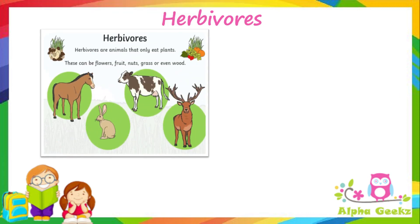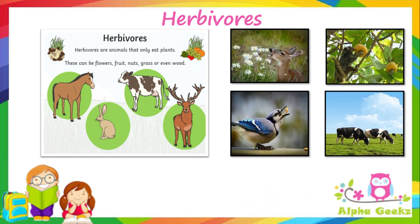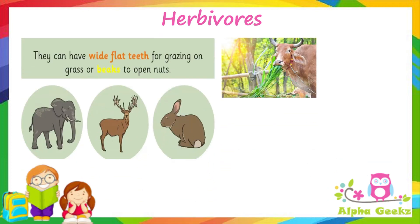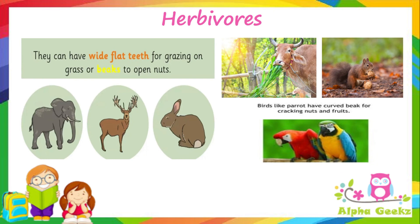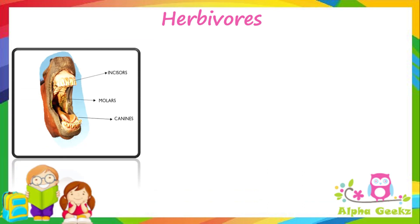Herbivores are animals that eat only plants. These can be flowers, fruit, nuts, grass or even wood. They can have wide flat teeth for grazing on grass or beaks to open nuts. Birds like parrots have curved beaks for cracking nuts and fruits. As these animals depend solely on eating plants, the plant food is rich in a substance called cellulose. Cellulose is the fibrous carbohydrate present in the cell walls of the plant, so it needs to be chewed well. For this purpose, herbivores have sharp incisors to cut the food and strong molars to grind food.